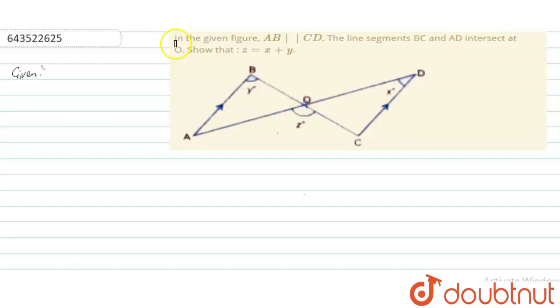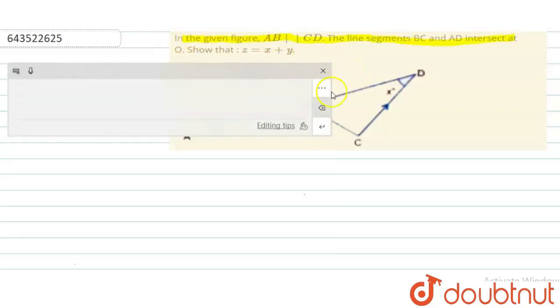Hello students, let us begin with the question. The question says in the given figure, AB is parallel to CD, the line segments BC and AD intersect at O.